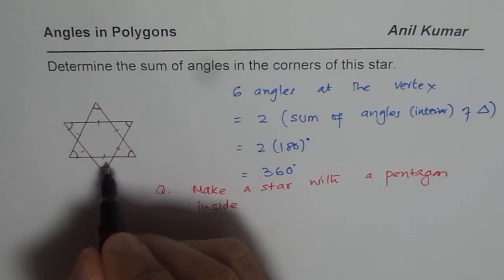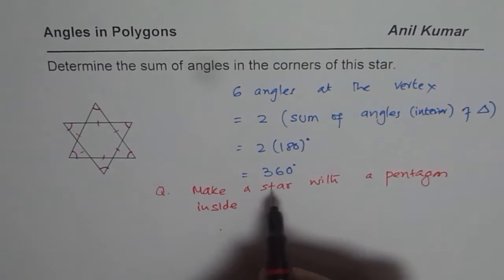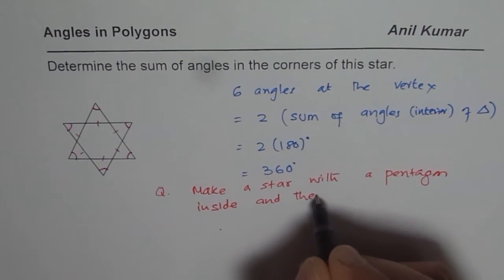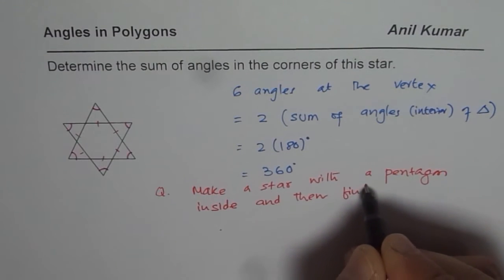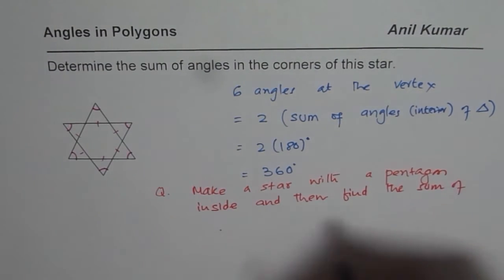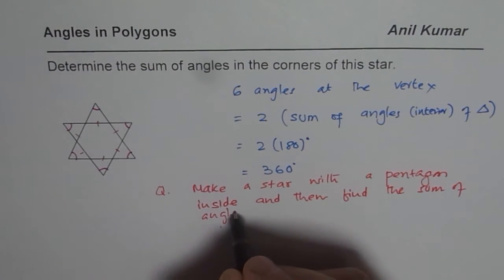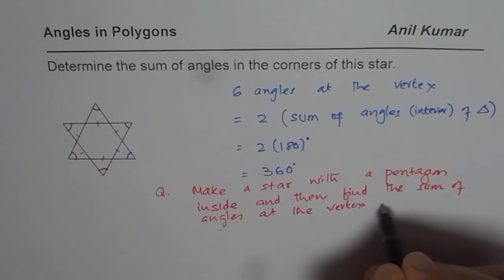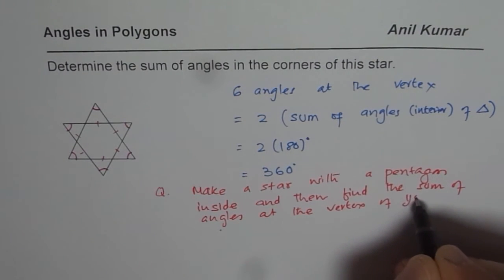Enclosed as we have here, a hexagon. So make a star with a pentagon and then find the sum of angles at the vertex of your star.